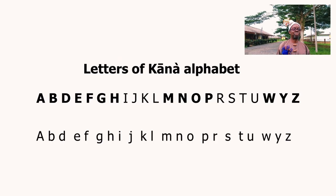Now let us look at the letters of the Kana alphabet. The Kana alphabet has about 22 letters — a mixture of consonant letters and vowel letters. They are: A, B, D, E, F, G, Z, K, L, M, N, O, P, R, S, T, U, W, Y, Z — totalling 22.